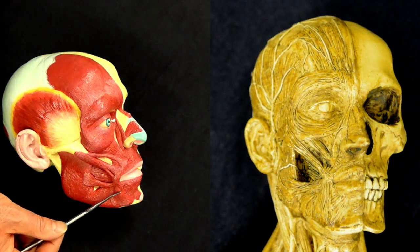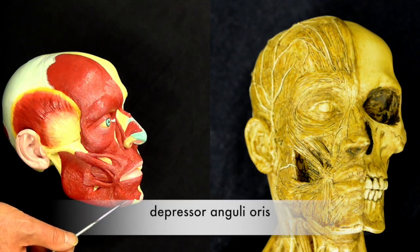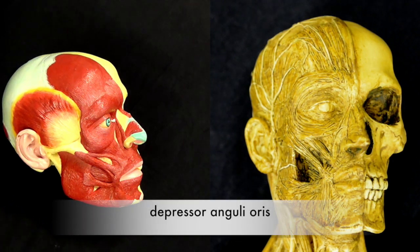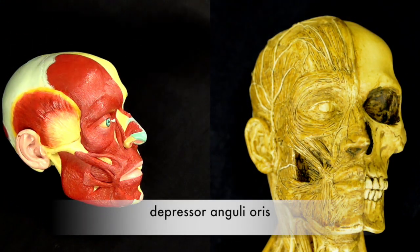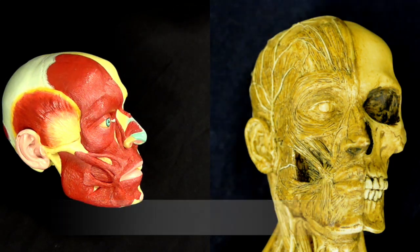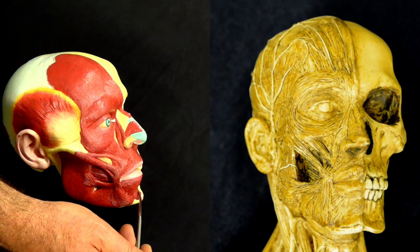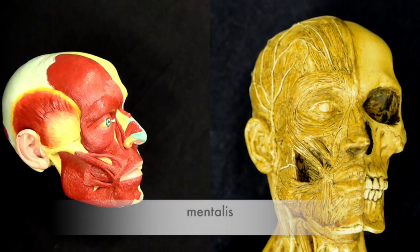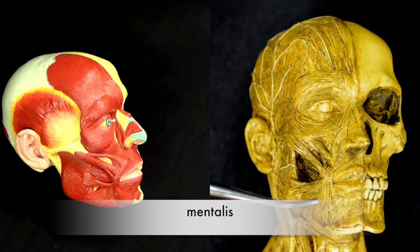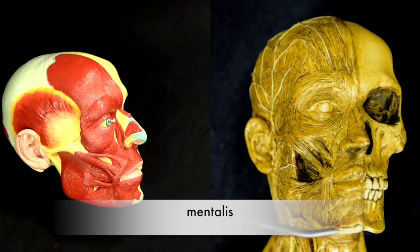Then this muscle here is the depressor anguli oris, and we can see it on this model here. Then on the chin we have this muscle called the mentalis, which we can see on this model here.